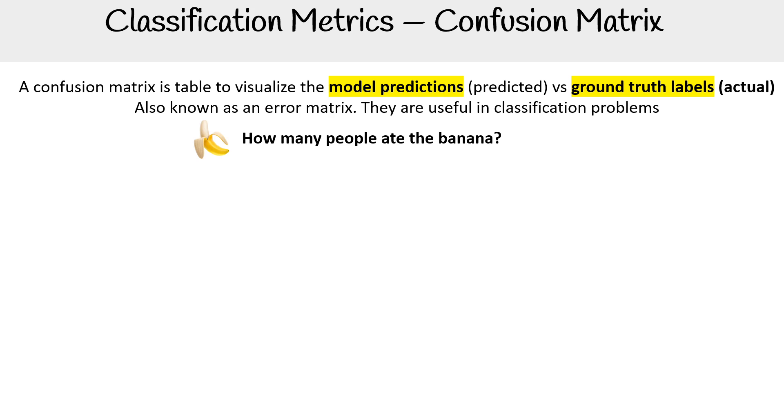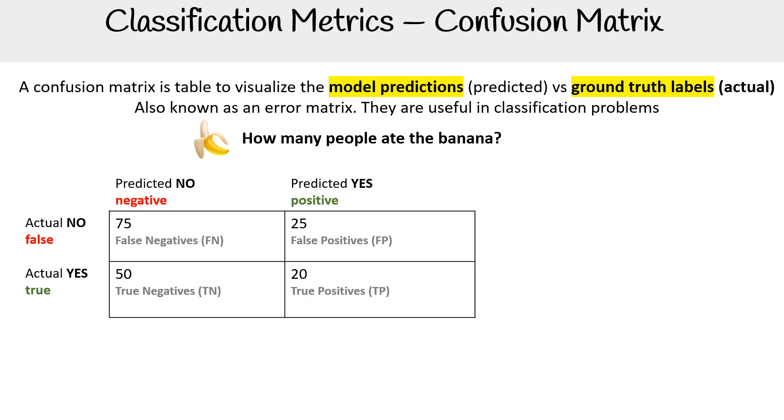Imagine we have a question: how many bananas did this person eat or these people eat? We have this box where we have predicted versus actual, and it's really comparing the ground truth and what the model predicted.